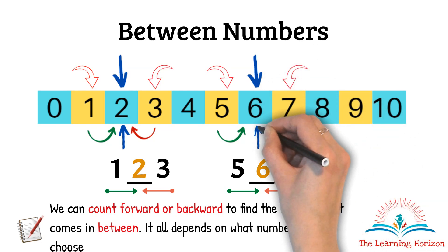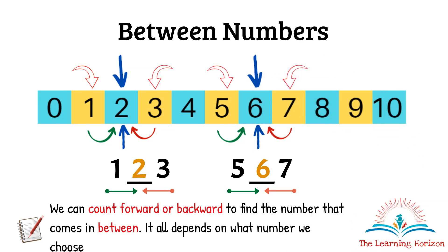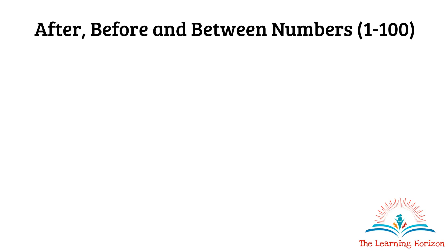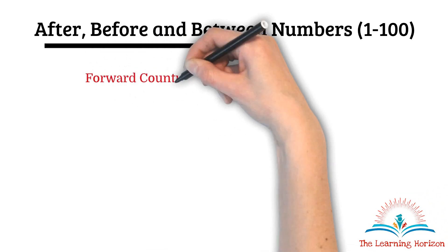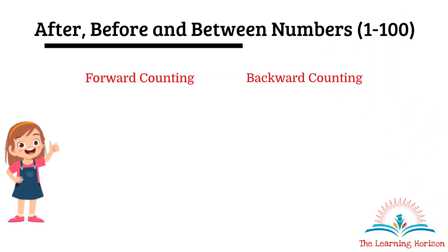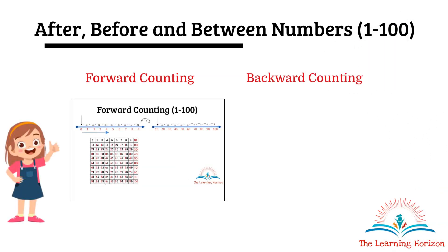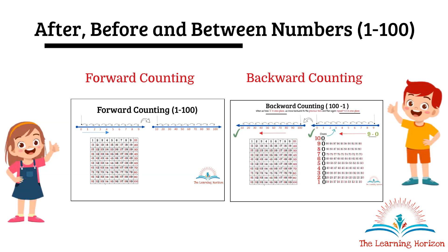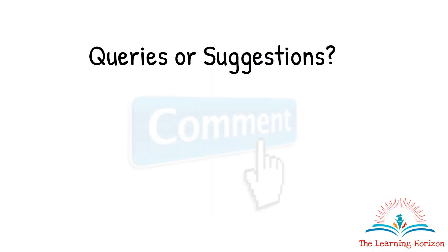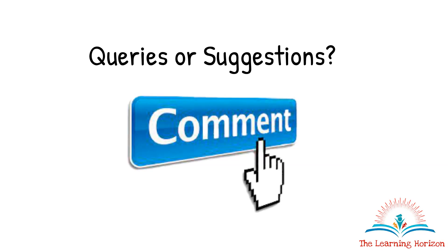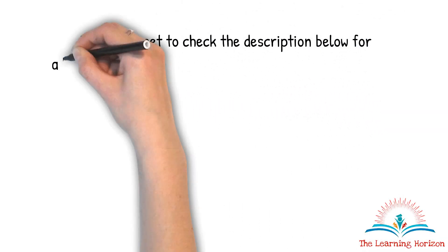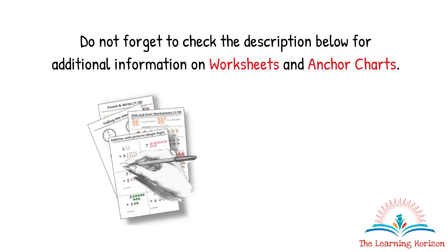The concept of finding numbers that come after, before, or between two numbers becomes very easy once we know forward counting and backward counting. We have made detailed videos for forward counting from 1 to 100 and backward counting from 100 to 1 — the links are in the description below. If you have any queries or suggestions, do leave a comment. Also check the description for additional information on worksheets and anchor charts.